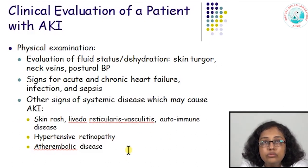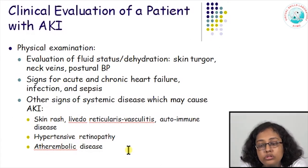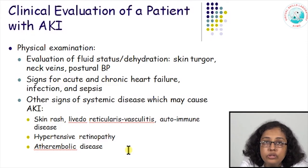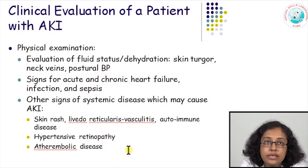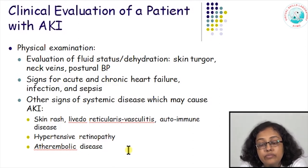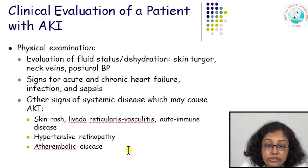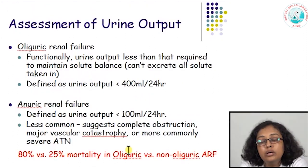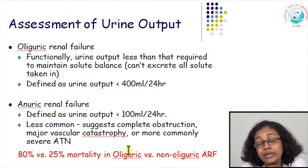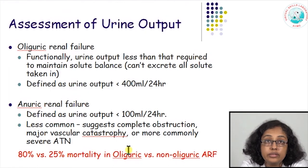Clinical evaluation is important and can tell us about hydration status — dehydration can lead to acute renal failure. We need to look for signs of acute and chronic heart failure, infections, signs of systemic disease like skin rash seen in vasculitis or autoimmune disease, and signs of atheroembolic disease. Based on urine output, renal failure is defined as oliguric, non-oliguric, or anuric.